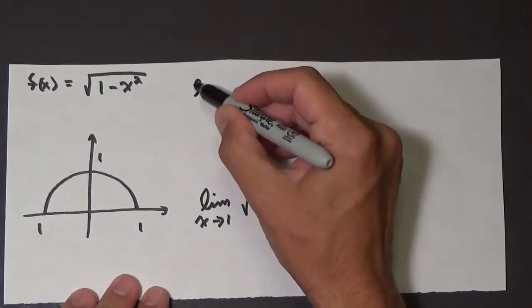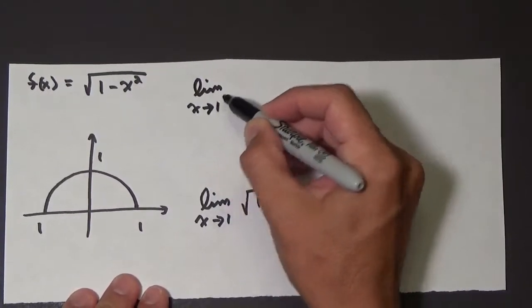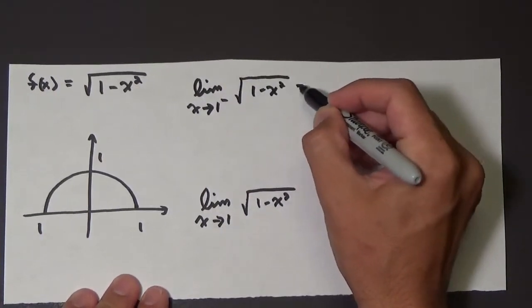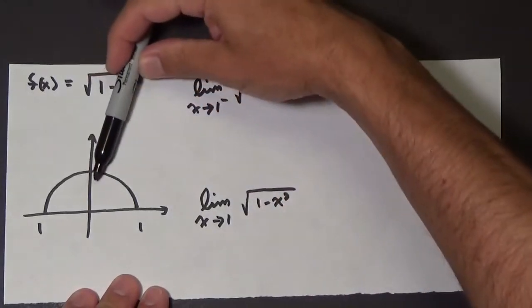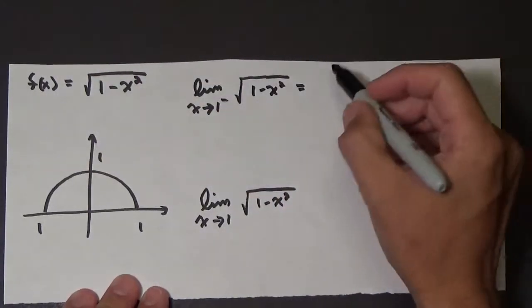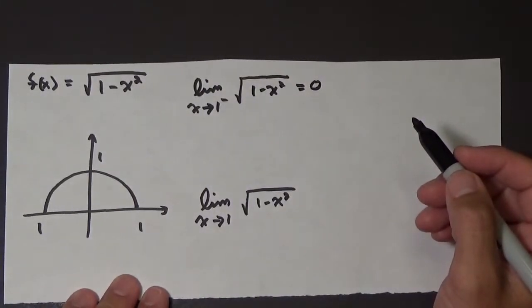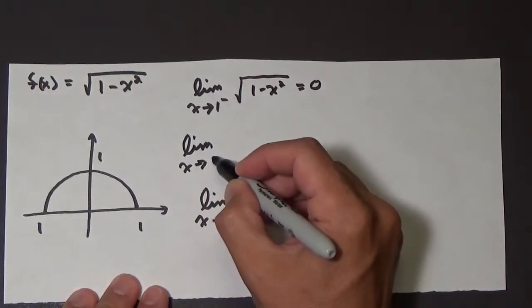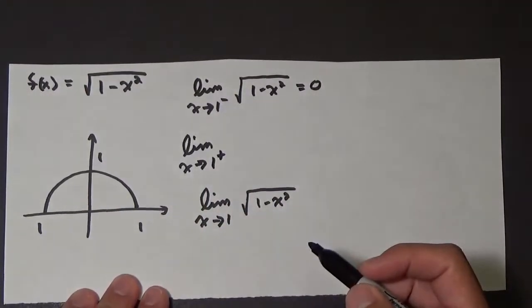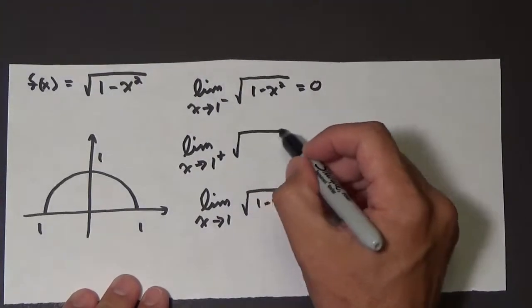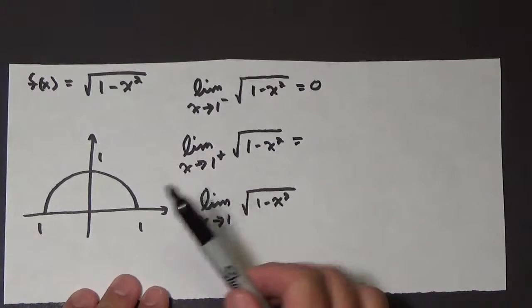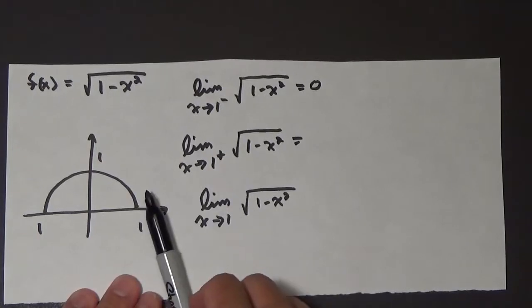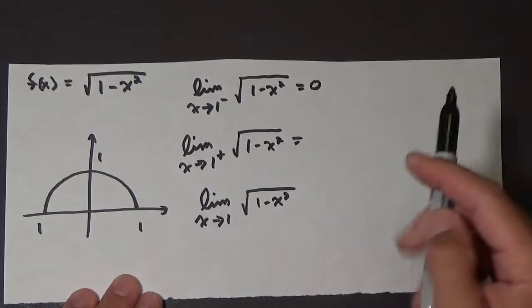The limit as x approaches 1 from the left-hand side of the square root of 1 minus x squared. Well, from the right-hand side, there's no function over here. We can't approach one without a function. So this one does not exist.